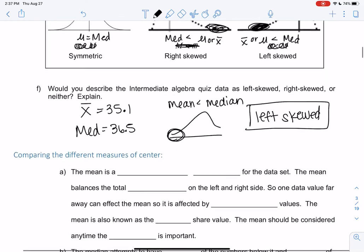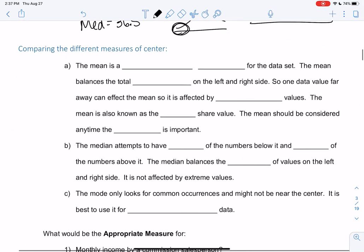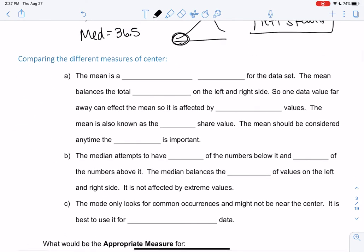Let's just summarize this section with comparing the three measures. We call the mean a balancing point for the data set. It balances the total distance on the left and right side.